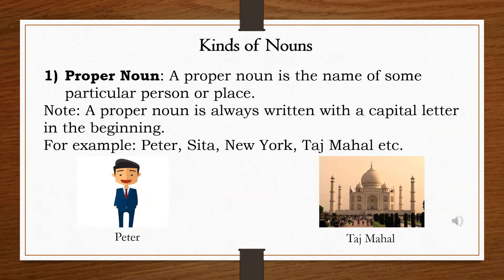Next we shall study the kinds of nouns. The first kind is proper noun. A proper noun is the name of some particular person or place. Any person or place with a specific name by which it is called is a proper noun. It always begins with a capital letter.